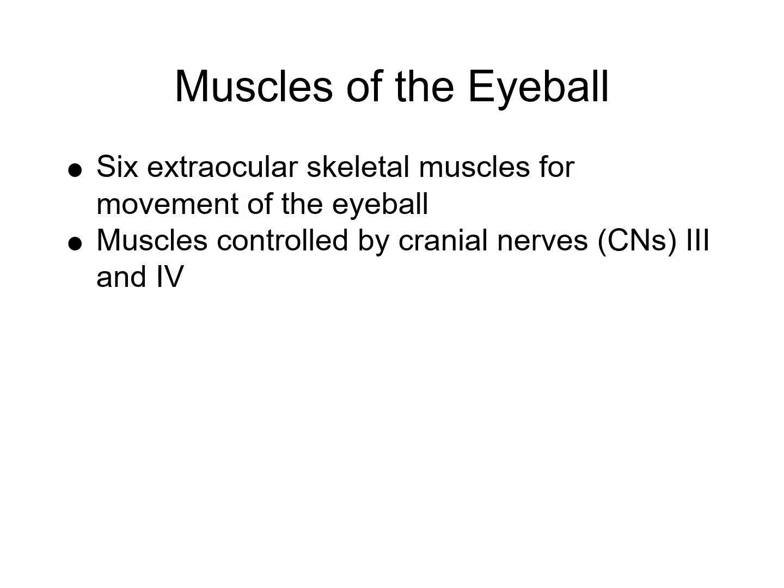Extrinsic muscles help control movement of the eyeball. There are six skeletal muscles — four straight rectus muscles and two angled oblique muscles — that are coordinated to help move and rotate the eye, and are under the control of cranial nerves 3, 4, and 6.